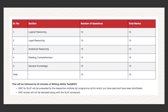In the MCQ section, there are 5 subjects: General Knowledge, Reading Comprehension, Analytical Reasoning, Legal Reasoning, and Logical Reasoning. These 5 subjects are similar to all other law entrance examinations you will already be preparing for, so you don't need to prepare separately. However, because there is negative marking in the MCQ section, you must ensure you answer carefully. Calculated guesswork can improve your rank, but students who are not thorough may lose marks.